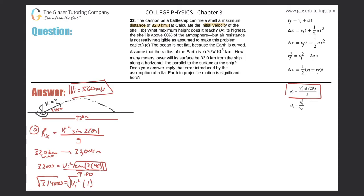Letter B: what maximum height does the shell reach? Let's draw a simple coordinate system with a y-axis and x-axis, and draw in the initial velocity vector. The initial velocity is 560 m/s. Now break this into components: the x-component and the y-component of the initial velocity. To find the maximum height, we need the initial velocity in the y-direction.